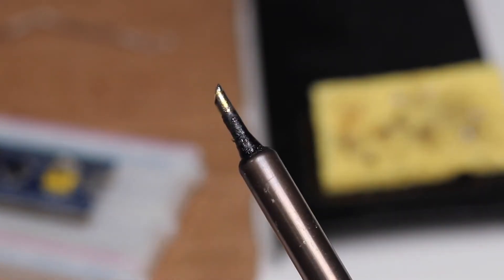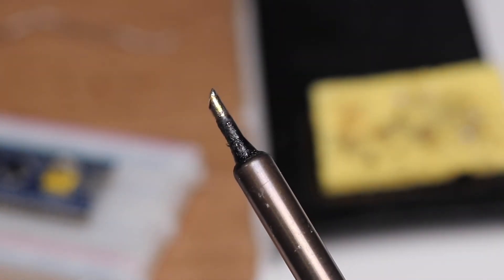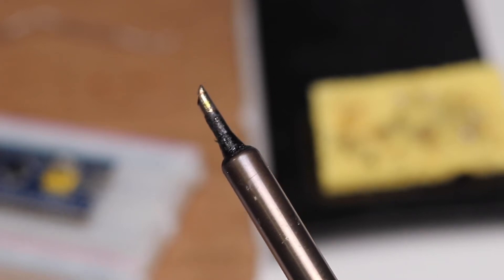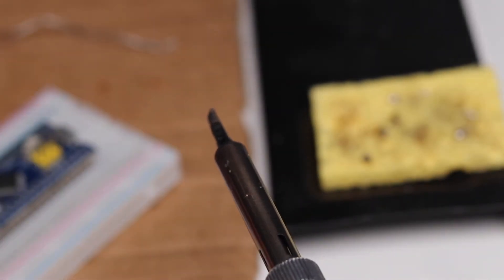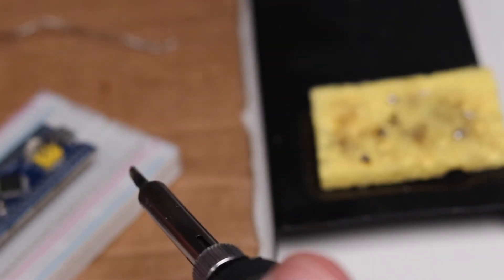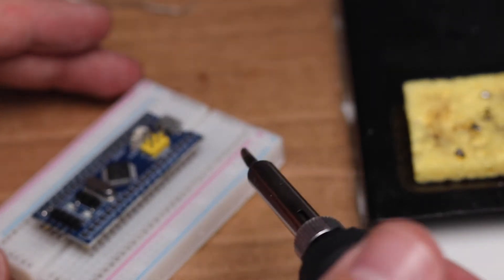Before you start soldering you want to make sure that you've got your biggest tip on your iron. Your bevel tip typically, you do not want to use a conical tip or a cone shaped tip, never ever. Screwdriver tip is good, bevel tip is best, cupped bevel tip is the very very best. You want to use big even though you're working on stuff that's small because what you're really trying to do is transfer heat and you want to do that as quickly and efficiently as possible.